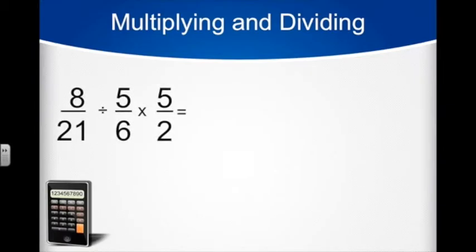Finally, let's consider a problem with 3 parts. 8 21sts divided by 5 6ths times 5 halves. Be careful to follow the proper order of operations here by working from left to right. We have to deal with a division before we can multiply.